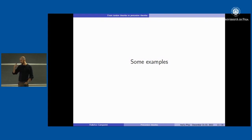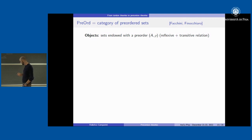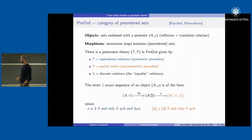All these examples will be of extensive categories, but I want first to give you some examples of pretorsion theories. The first one is in the category of preordered sets — objects are preorders (reflexive and transitive relations), morphisms are monotone maps. The pretorsion theory is given by: the torsion part consists of equivalence relations, the torsion-free part consists of partial orders (symmetric vs. antisymmetric relations). Their intersection gives just equalities — the trivial objects are the equality relations.